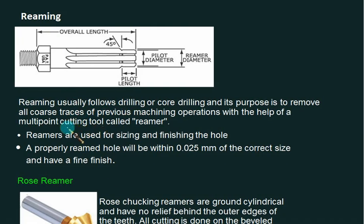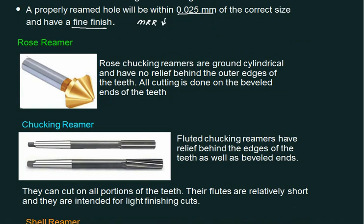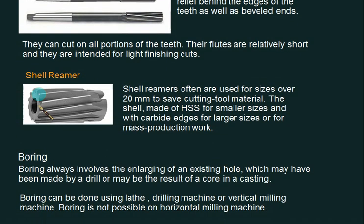Reaming usually follows drilling. The purpose is to get an exact finished hole, approximately 0.025 mm of the correct size with very high finish and fine finish. MRR for reaming is very low compared to drilling. Depending on the shape, we have rose reamers, chucking reamers with straight or angled flutes, and shell reamers.